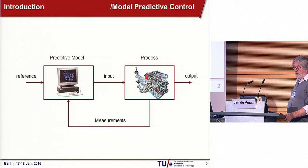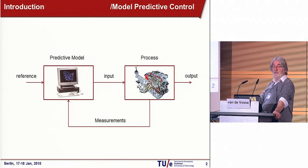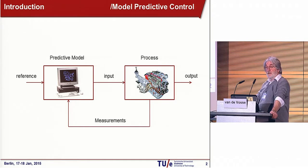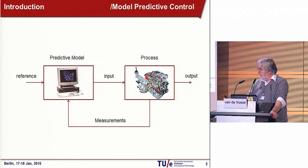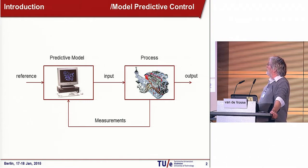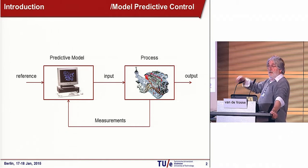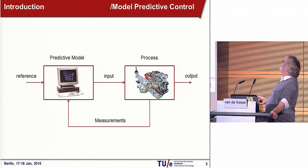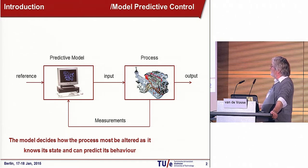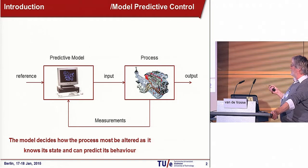Before I talk about modeling, I would like to make a comparison with what is happening in, for instance, a car engine. Nowadays, modern car engines are equipped with computers that control the engine, that can control all kinds of parameters to make the engine work as well as possible. There is a control system — actually, a computer. In Newcastle there are many computers that control the engine via all kinds of input. By measuring what the engine is doing, this system knows how to change the input to get a certain output. To do that, it needs to be able to predict what would be the outcome of changing the input; otherwise, it would be just a random change of input. This is called model predictive control — the model decides how the process must be altered as it knows its state and can predict its behavior.